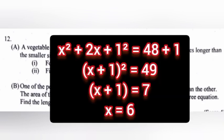Length of sides: x square plus 2x plus 1 square equal 48 plus 1. x plus 1 the whole square equal 49. x plus 1 equal 7. x equal 6.